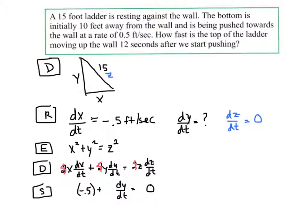We started off, the bottom was 10 feet away. And we're pushing it 0.5 feet per second for 12 seconds. Well, of course, 12 seconds times 0.5 feet per second means it's moved 6 feet. So, it started at 10 and we've pushed it in 6 feet. That means that x has a length of 4.